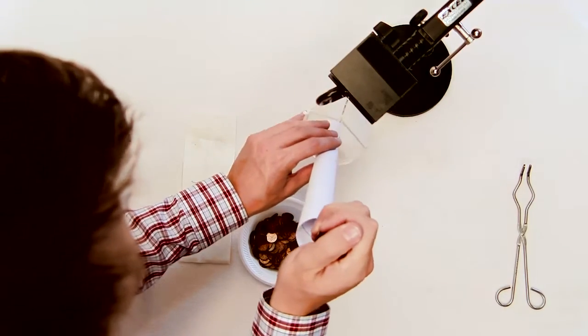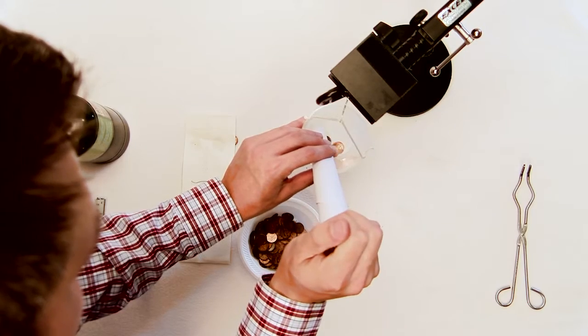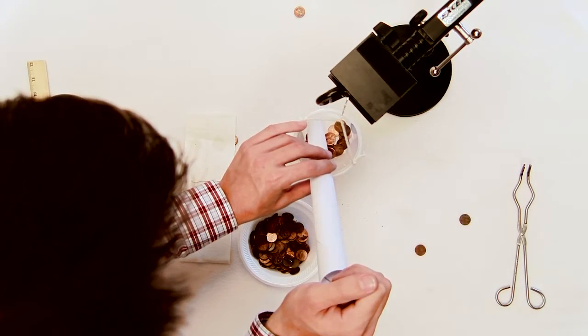Repeat the process using the quenched bobby pin. Set up the quenched bobby pin as before. Load the pennies into the cup being held by the quenched bobby pin in the same fashion as the control and annealed bobby pins.